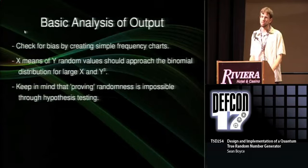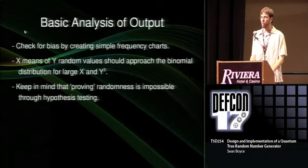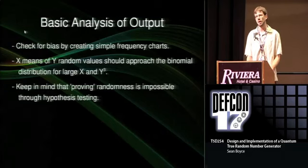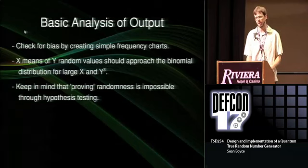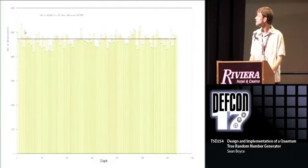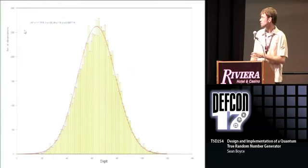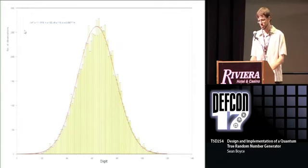You start by creating basic frequency charts to make sure you have no missing numbers. You can also try to recreate the binomial distribution by plotting the frequency of averages of sets of numbers. You have to keep in mind that proving randomness is impossible using traditional hypothesis testing statistics — what you're really doing is looking for problems you expect to have and then fixing them. This is a frequency chart for the first 60,000 random numbers generated, and we didn't see anything unexpected. Then taking 10,000 means of six digits and graphing them, we get approximately the binomial distribution.